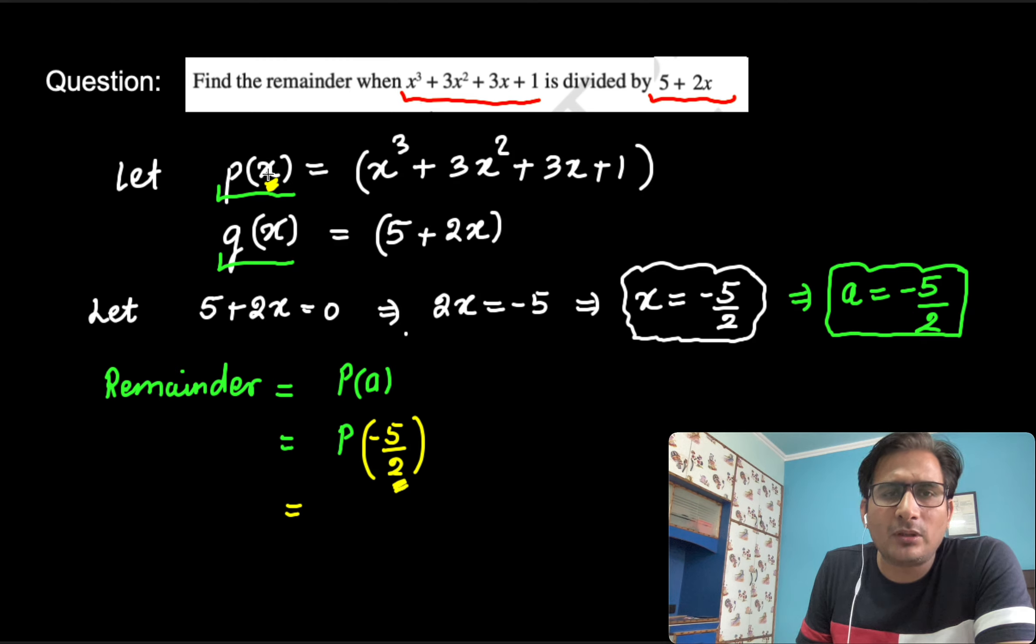If we find out left side, we will find out right side, what should we put at the place of x? Minus 5 by 2. What will we get here? Yes, absolutely right. Minus 5 by 2 power 3 plus 3 times minus 5 by 2 square plus 3 times minus 5 by 2 plus 1.